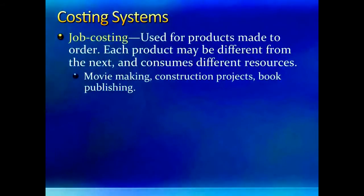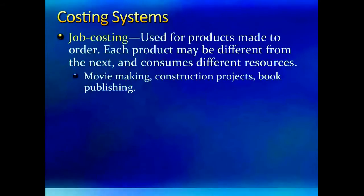Two types of cost systems are commonly used in companies depending on the nature of their product. A company would use a job order costing system when each job is made to order. The unique nature of each order requires maintaining separate cost records for each job. For example, a construction company may be building a bridge and a school at the same time, but they have to keep all material and labor costs in separate pools because they need to know exactly what the bridge costs or what the school costs. A company making movies or bridal dresses would also have to keep track of costs for each cost object separately.